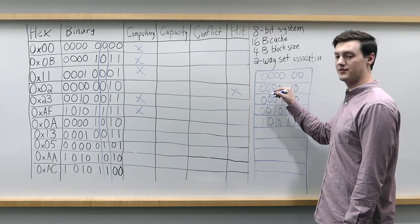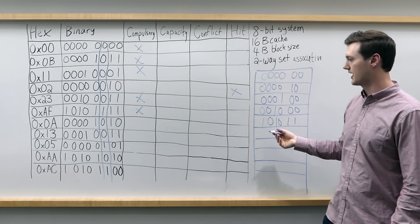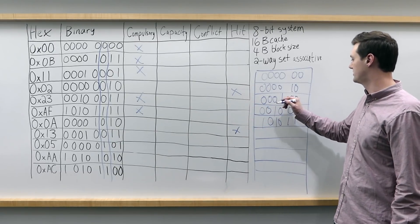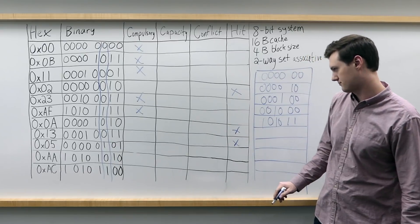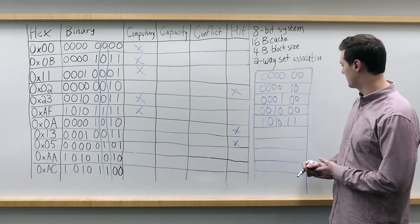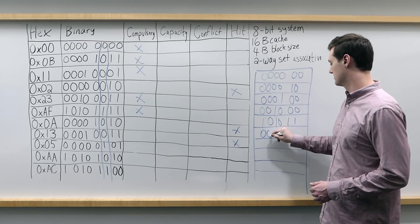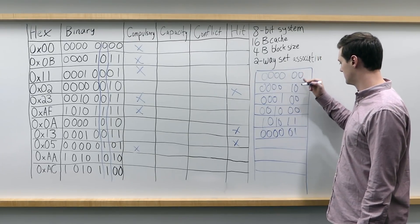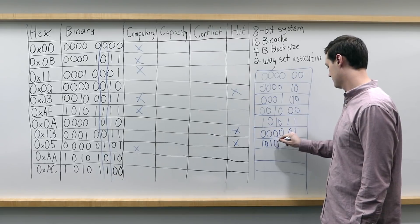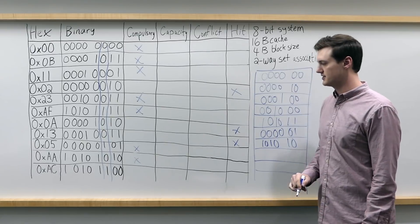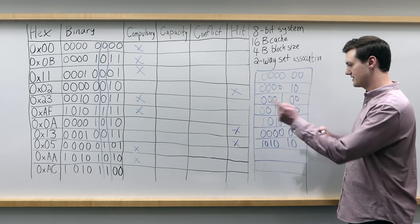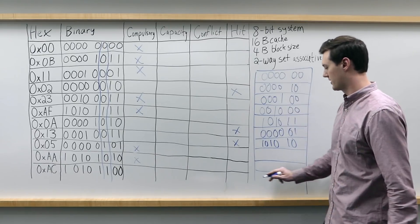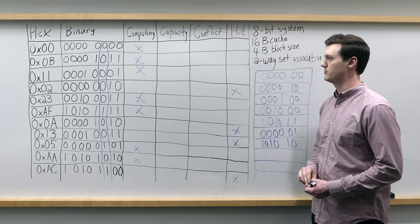For 0x05, five zeros and then a 1 — not in our cache yet, so we add that tag and call it a compulsory miss. For 0xAA, the tag 101010 is also not yet in our cache, so that's compulsory as well. And finally for 0xAC, the tag — those six most significant bits 101011 — matches a cache line already in the cache, so we'd classify that as a hit for the time being. That's how we run the simulation for compulsory misses.